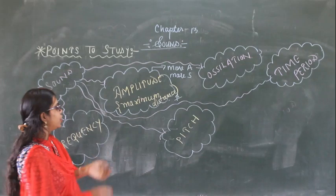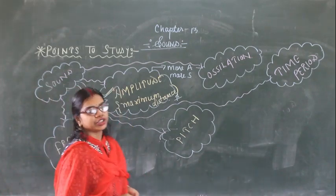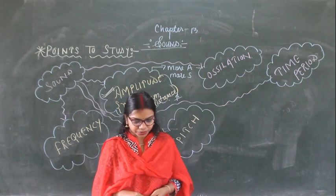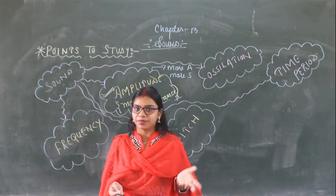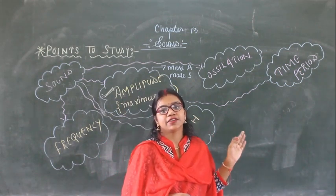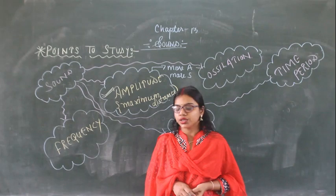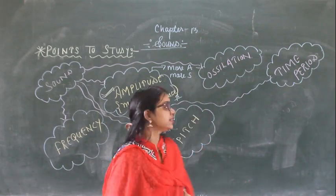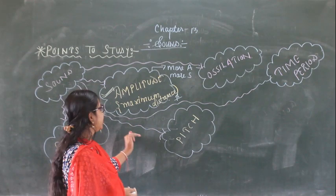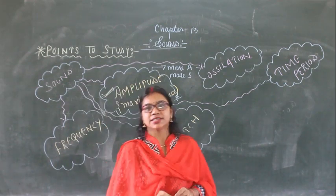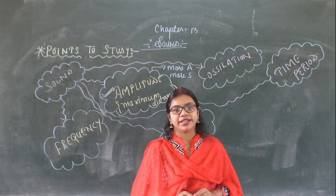The first one is amplitude. What is amplitude here? Sound is nothing but a kind of vibration, as I told you in the previous lecture. So according to this, what is the amplitude? The maximum distance travelled by a point on a vibrating body.